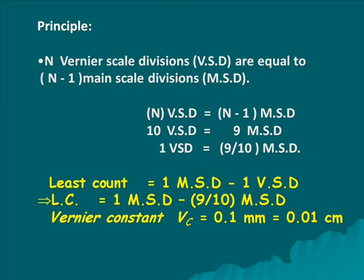1 Vernier scale division is equal to 9 by 10 main scale divisions. The least count is given by the formula: 1 main scale division minus 1 Vernier scale division. That is, least count is equal to 1 MSD minus 9 by 10 MSD.